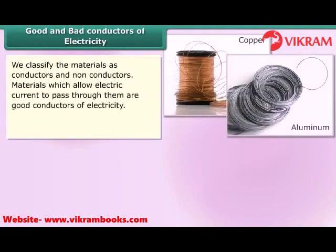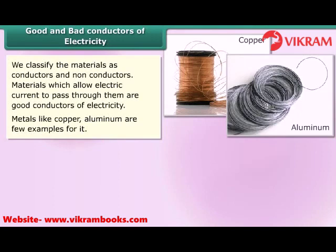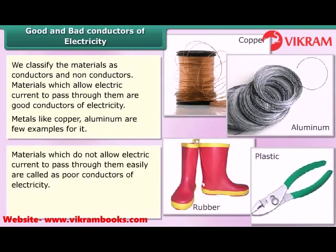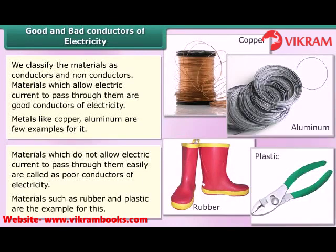We classify materials as conductors and non-conductors. Materials which allow electric current to pass through them are good conductors of electricity — metals like copper and aluminium are a few examples. Materials which do not allow electric current to pass through them easily are called poor conductors, such as rubber and plastic. We use a tester to test the conductivity of materials in solid state.